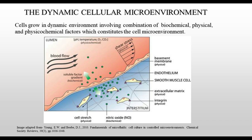Let us see how dynamic cellular microenvironment works. A dynamic system is a combination of biochemical, physical, and physicochemical factors that constitute the cell's microenvironment. As seen in this schematic, cells experience blood flow, shear stress, pressure drop, stretching, and interaction with physical barriers, collectively imparting physical forces on the cells. There are also concentration gradients, exchange of gases, chemical signaling molecules, and extracellular molecules constituting the biochemical factors. Physicochemical factors such as temperature and pH also collectively interact and affect the cells.